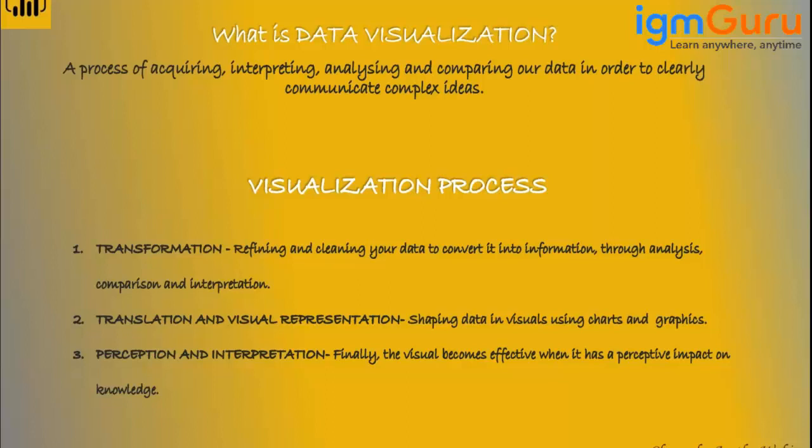We bring that raw data into Power BI and convert it from raw data to a structured data set. A structured data set may vary from individual to individual in terms of visual representation and what a person wants to do with it, but we convert it into a format which can be further used. This process of moving from raw data to a structured data format is called Transformation.